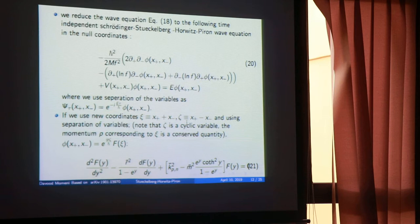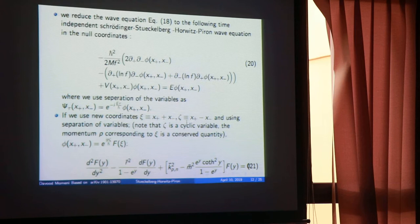In the previous slides I presented the curved space model. What I did was expand the Stückelberg-Horwitz-Piron-Schrödinger wave equation in null coordinates and try to solve it. By defining a new coordinate, you can reduce the problem to a single-variable differential equation given in equation 21, which can be solved to determine the wave function.